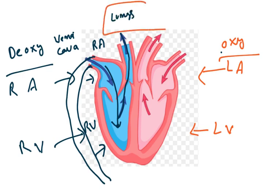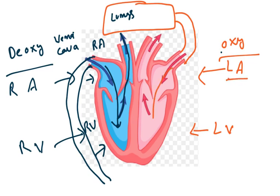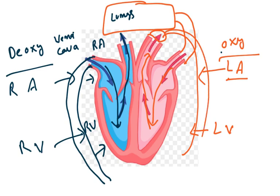In the lungs, gas exchange takes place and deoxygenated blood is converted to oxygenated blood. Now this purified oxygenated blood gets into the heart — it gets into left atria. When left atria contracts, the blood comes down to left ventricle. When left ventricle contracts, the blood gets into aorta. From this aorta the blood reaches every part of our body.